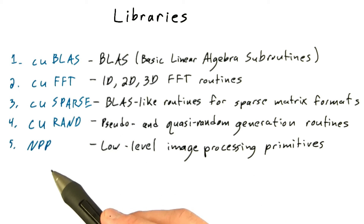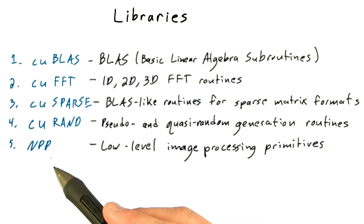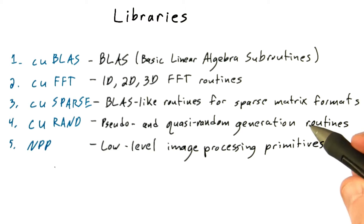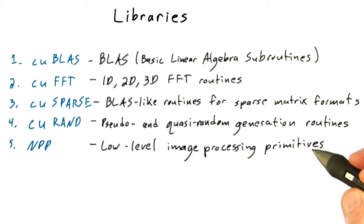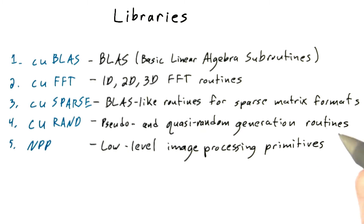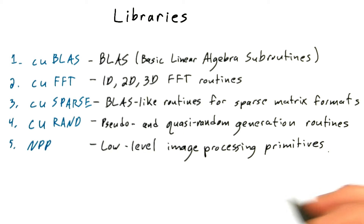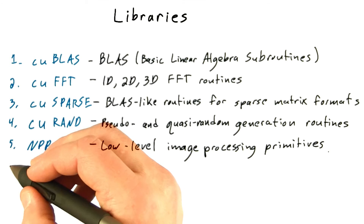NPP stands for NVIDIA Performance Primitives, and this is basically low-level image processing primitives — highly optimized low-level primitives for image processing.